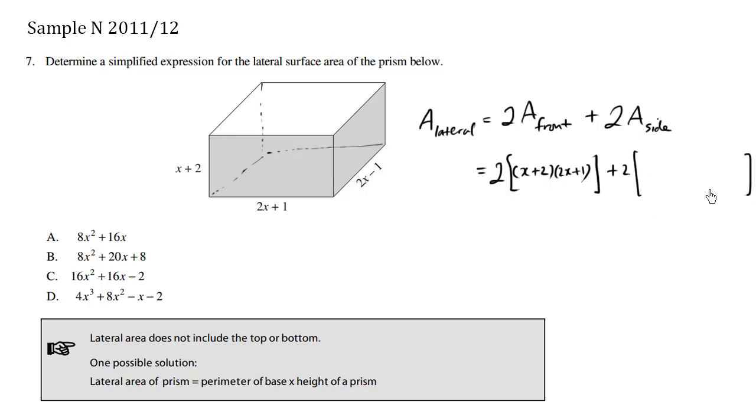Area of the side. The area of the side, we have the bottom of the rectangle here, which is 2x minus 1. And we have the height, which is x plus 2.